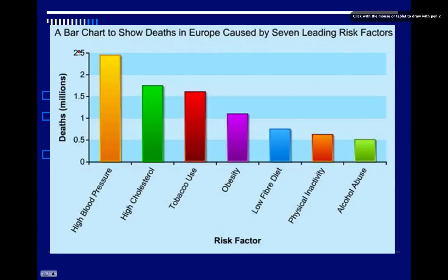It's called a bar chart to show deaths in Europe caused by seven leading risk factors. So here we have a quantity that's changing that's related to a number of different factors. There may or may not be any connection between these factors. So our factors are high blood pressure, high cholesterol, tobacco use,